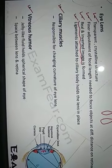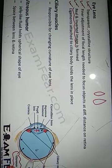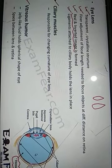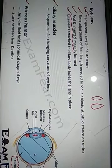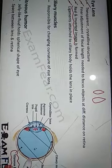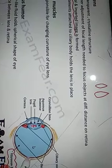Next is vitreous humor. The entire inner space of the eye is filled with vitreous humor. It is more jelly-like, with less water content, but it fills the entire space and helps to maintain the spherical shape of the eye. Like a balloon filled with water or air maintains its shape, this jelly-like fluid maintains the spherical shape of the eye. The entire space between the lens and the retina is filled with this fluid called vitreous humor.